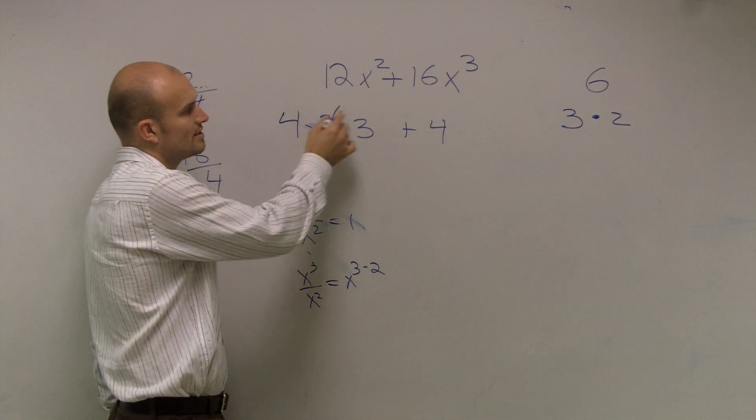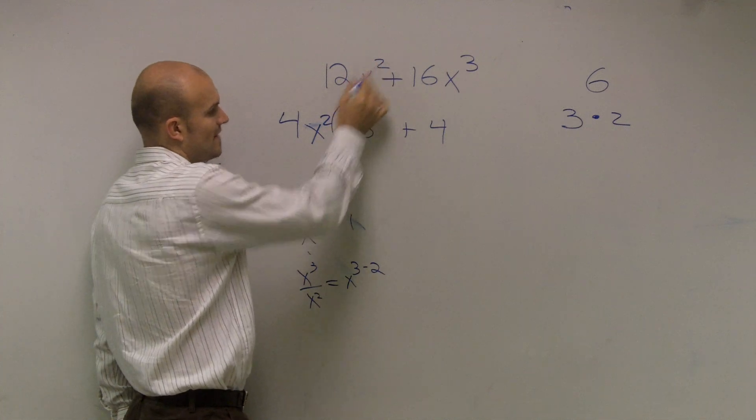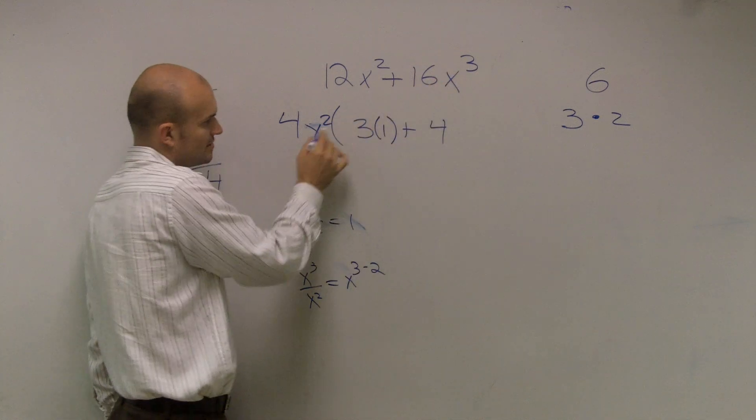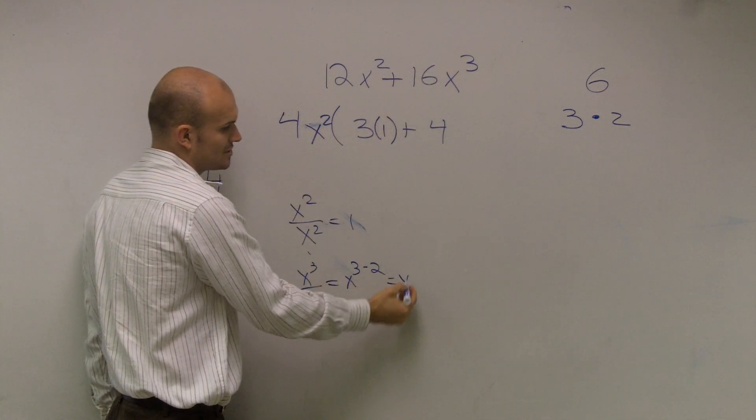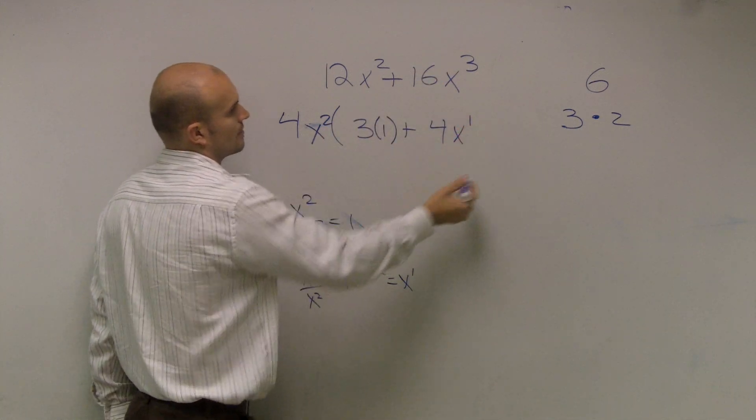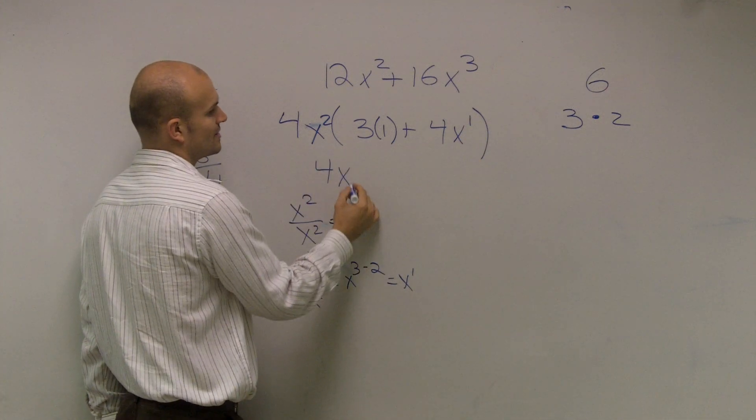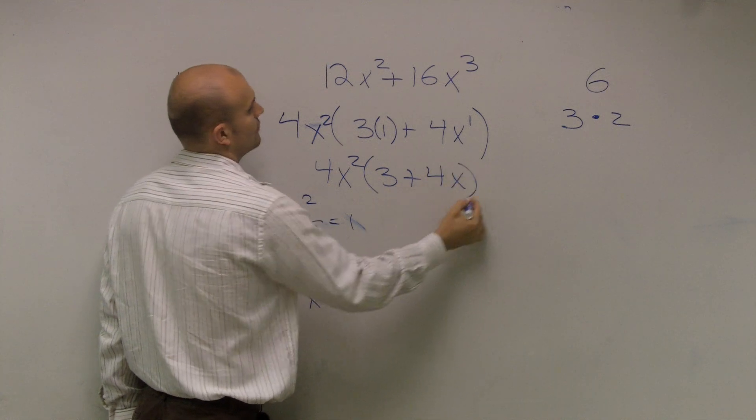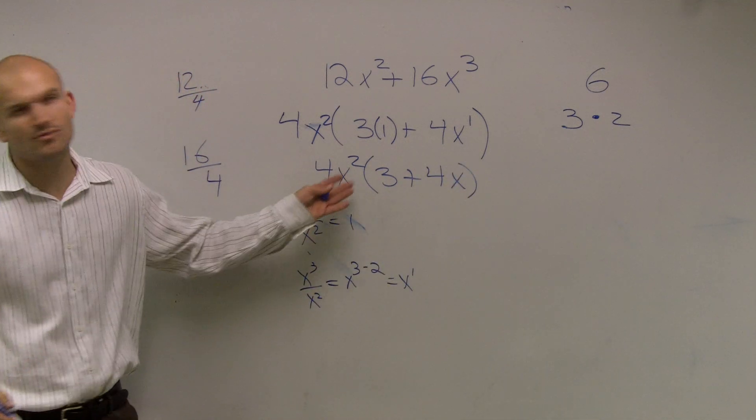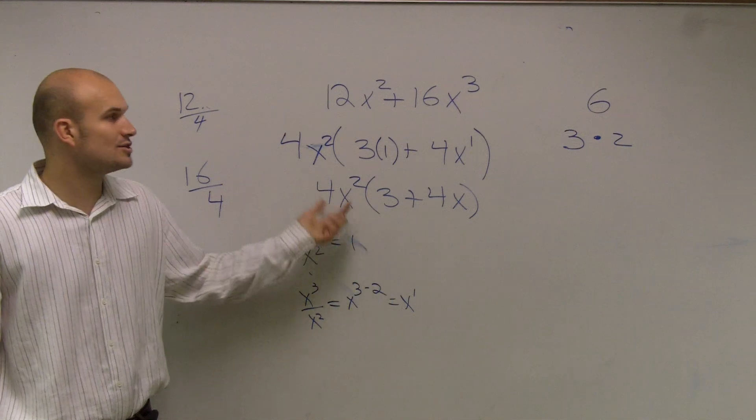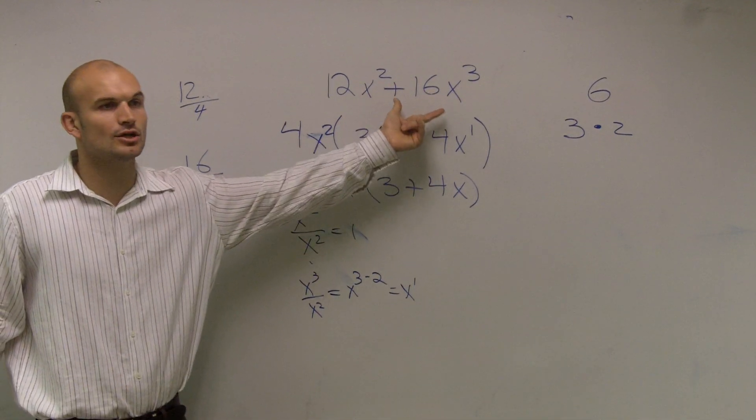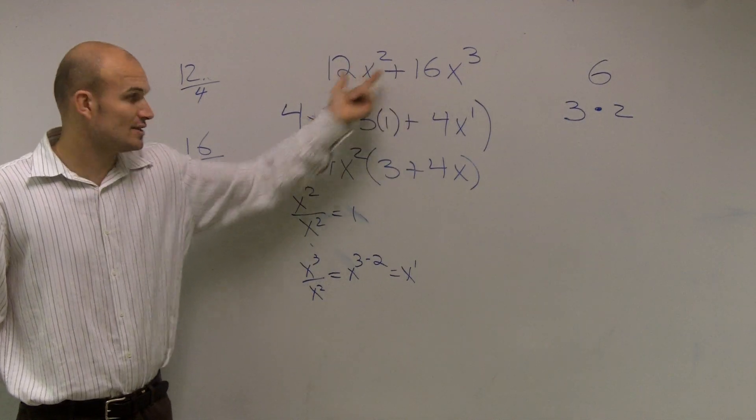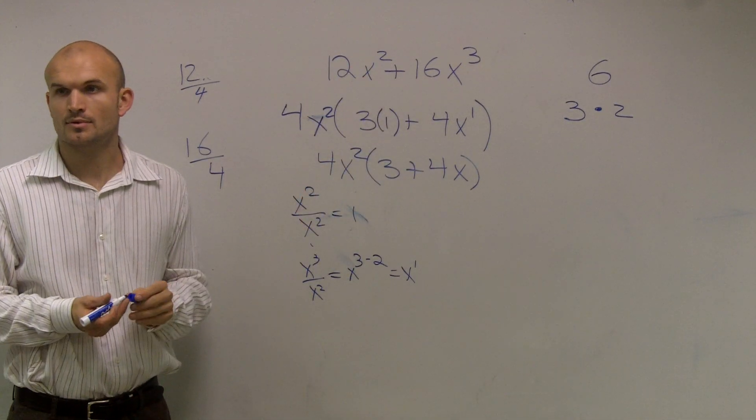So I can do 4x² times 3. Well, if I divide x² by x², that just leaves me 1. And then x³ divided by x² gives me x to the first power. So therefore, I'm going to write my final answer as 4x² times 3 plus 4x. And we're not going to write the prime factorization. All we want to do is just factor out the greatest common factor between these two terms. And the greatest number was 4, and the greatest variable was x².